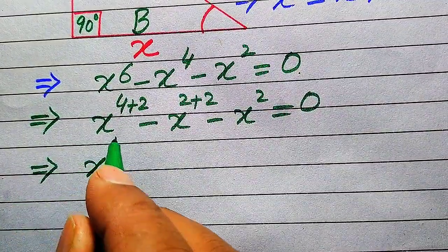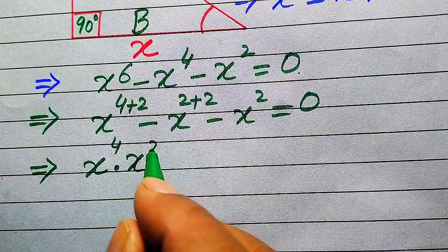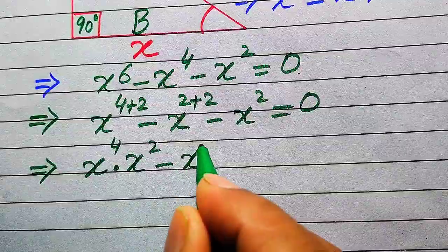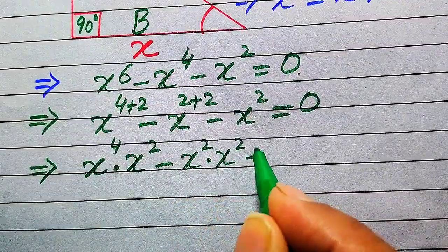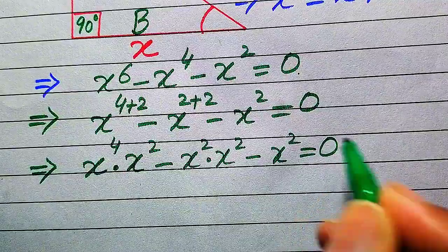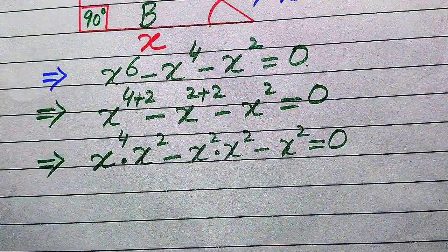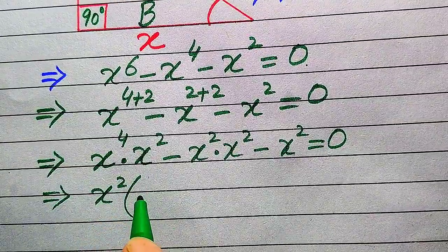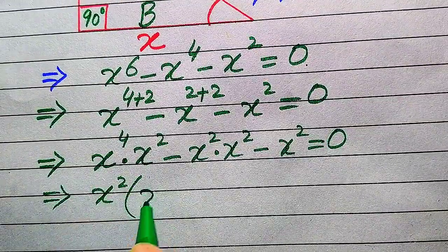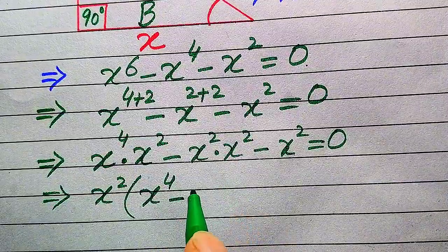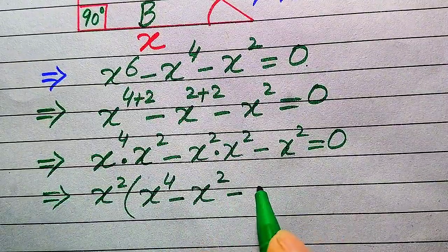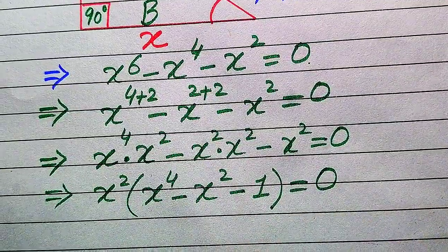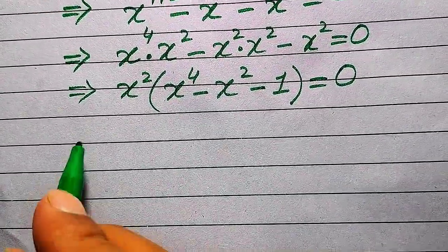Breaking the exponents, we get x⁴·x² - x²·x² - x² = 0. All three terms involve x², so we factor out x², giving: x²(x⁴ - x² - 1) = 0.